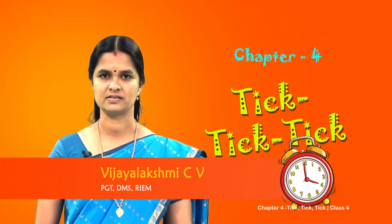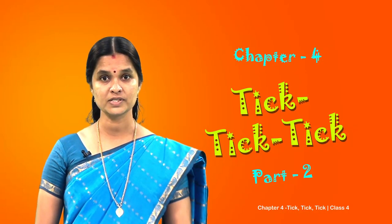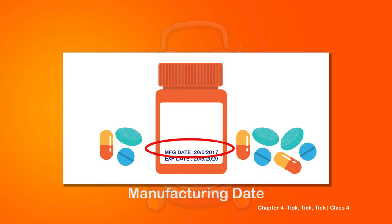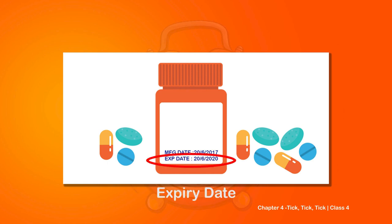Now let us move on to another important area where we use dates - food items and medicines that we purchase. What can you observe? These are very important pieces of information given on food or medicine packets. MFG date means manufacturing date, which tells us when the product was made. Expiry date tells us till which date we can safely use the item.